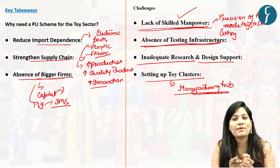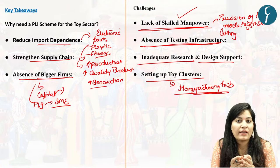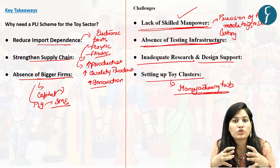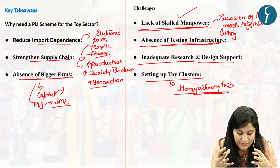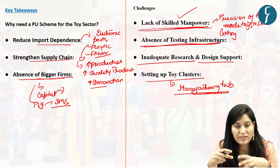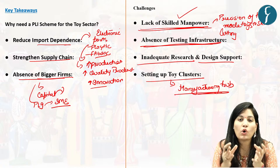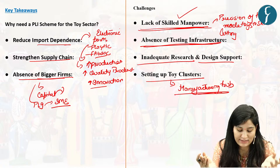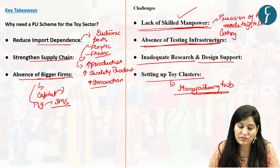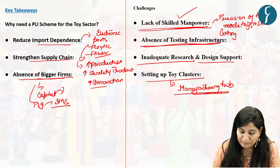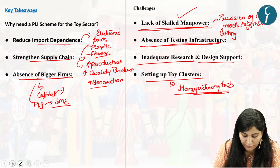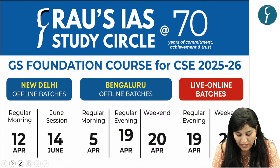In conclusion, the PLI scheme for the toy industry should recognize the needs of all segments of the industry and all stages of production to strengthen this sector.